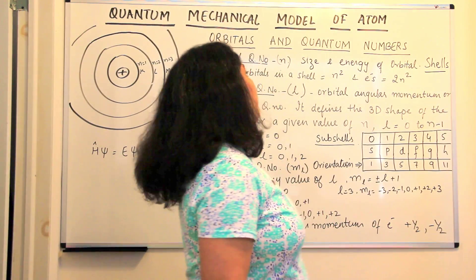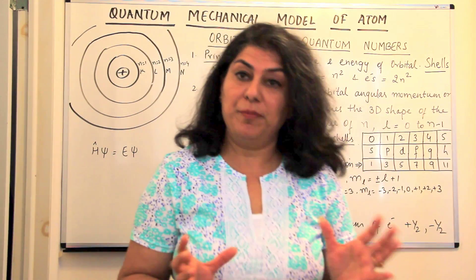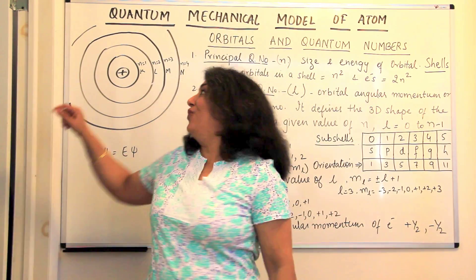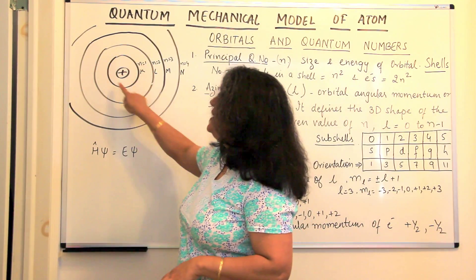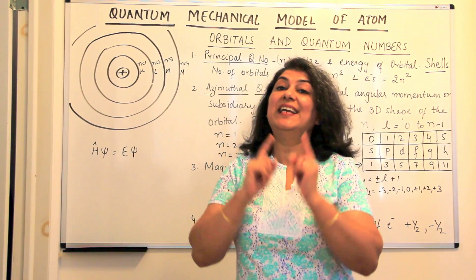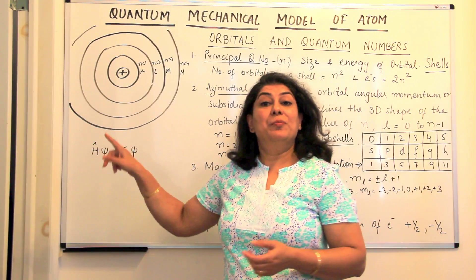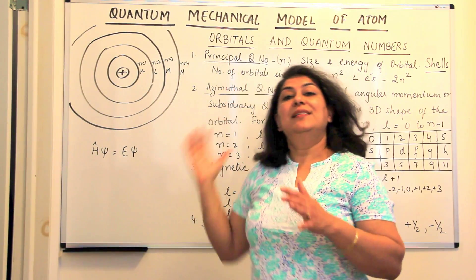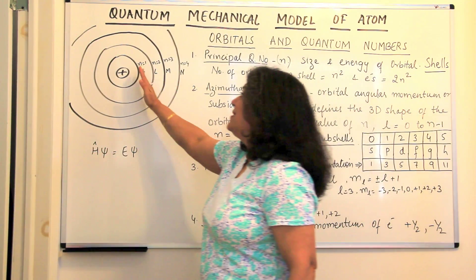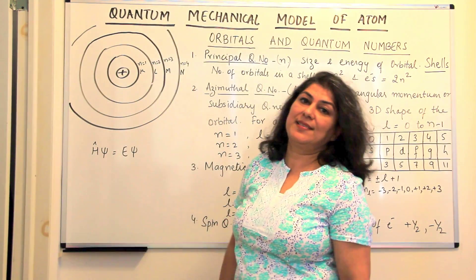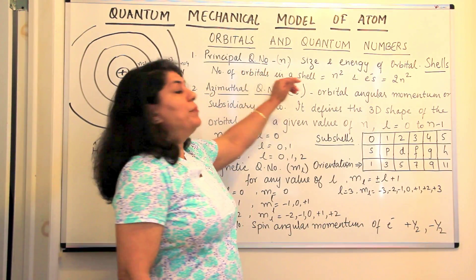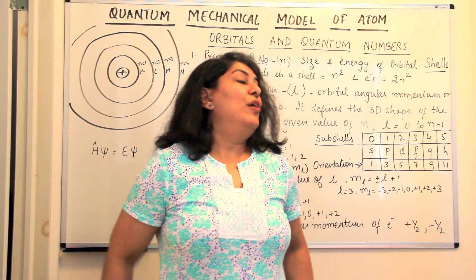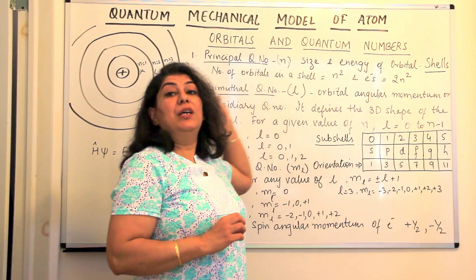Let us go through them one by one. The first quantum number is known as the principal quantum number, represented by the letter N. It tells you about the size and energy of the orbital present in a shell — it indicates the shell. The energy levels are N=1, N=2, N=3, N=4, N=5, with N=1 having the least energy and increasing from there. So the principal quantum number N tells you the energy level or shell in which the electron is present.